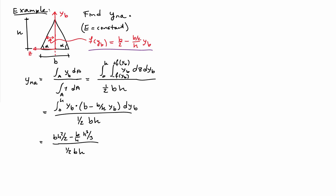And we get this expression here. And we can simplify that a little bit. And we end up with h over 3 for the location of the neutral axis, which is equal to the centroid in this case. So that's h over 3 from the bottom of the beam here. So if I plot that, it looks as follows.